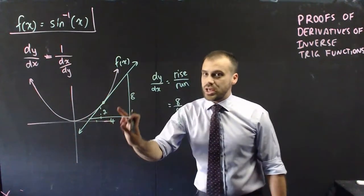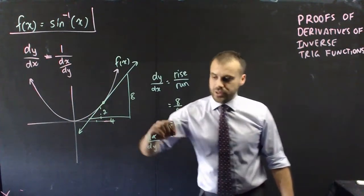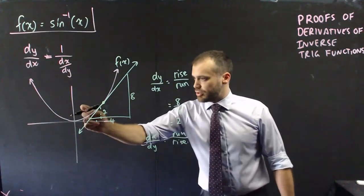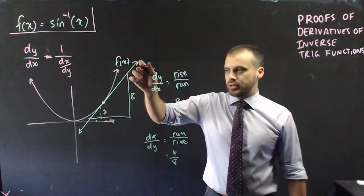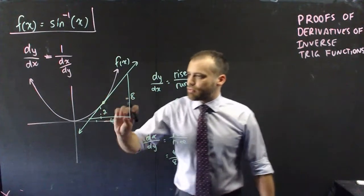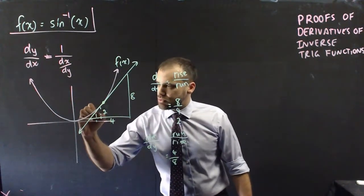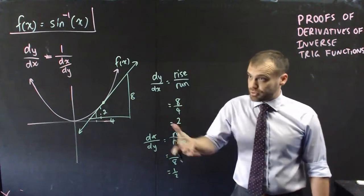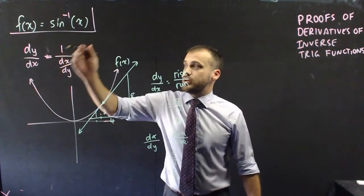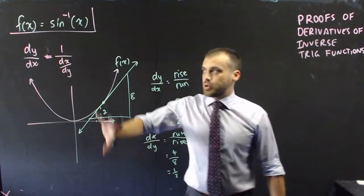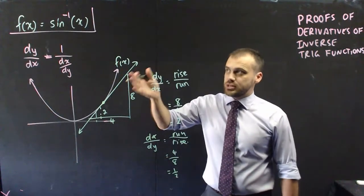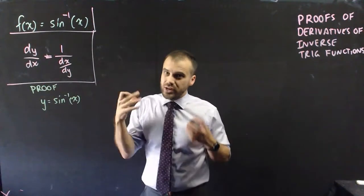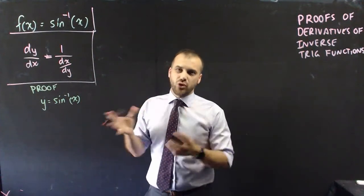dx/dy is the change in x with respect to y, which can be written as run over rise. In this case, it goes 4 across for every 8 up — so for every 1 that it goes up, it goes half across. You can see the relationship between the two: they're reciprocals. That's why we can say dy/dx equals 1 over dx/dy. All of this work doesn't directly relate to inverse trig functions, but it's a fact we need to prove what the derivative is going to be. So let's get started — we're going to find the derivative of inverse sine x, and this is the formal proof.